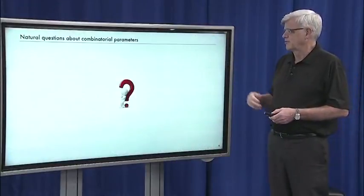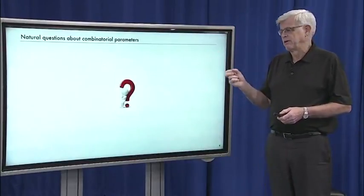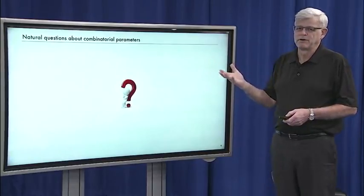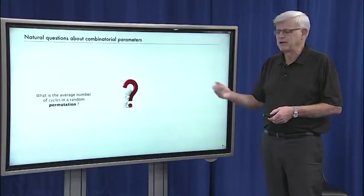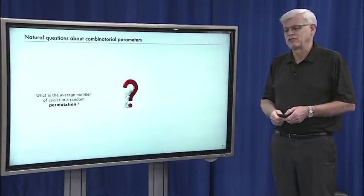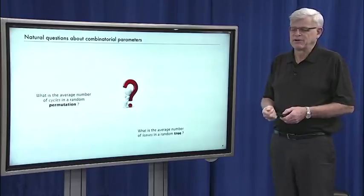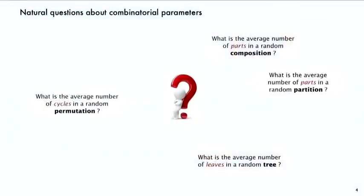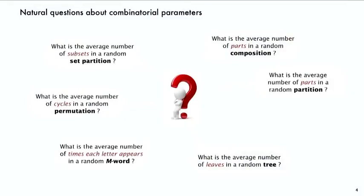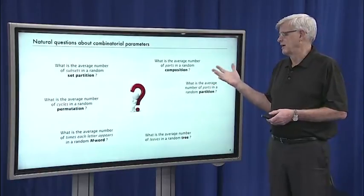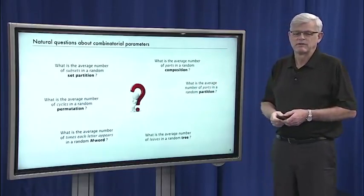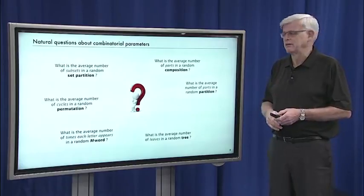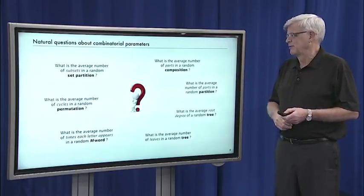Let's talk about the basic principles of combinatorial parameters. Up until now we've really just been counting things, but sometimes we want to know properties of the structures. For instance, we know that permutations consist of sets of cycles — we might want to know how many cycles we're likely to see in a random permutation on average. Or how many leaves are there in a random tree? Or how many parts in a random composition or partition? Or how many subsets in a set partition? These are all natural questions. Average root degree of a random tree is another one.